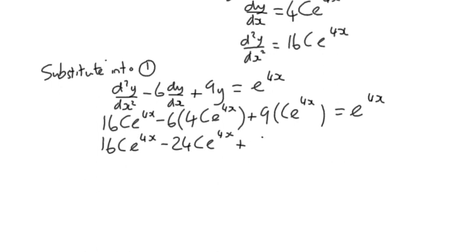16Ce^(4x) - 24Ce^(4x) is -8Ce^(4x). Plus 9Ce^(4x) gives you Ce^(4x) = e^(4x). In other words, C has got to be 1 by comparing the coefficients. Therefore, C is 1.